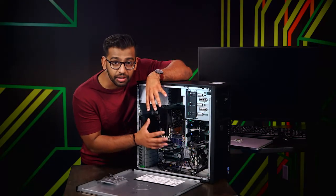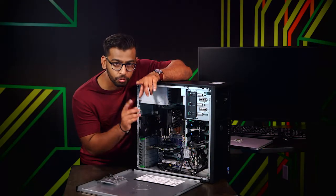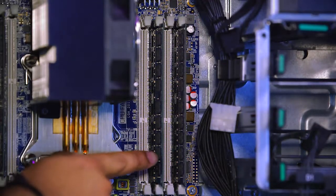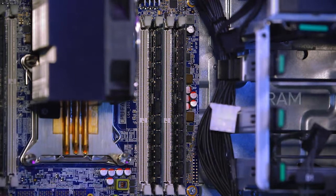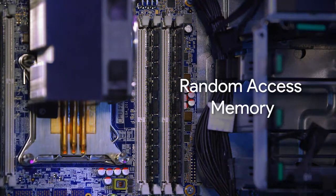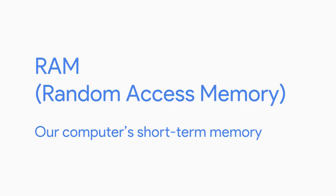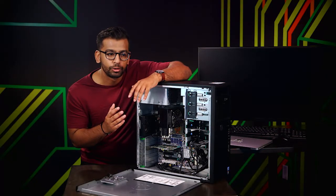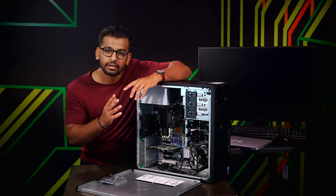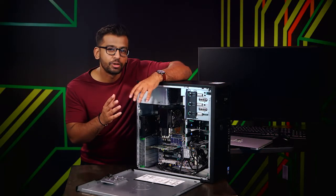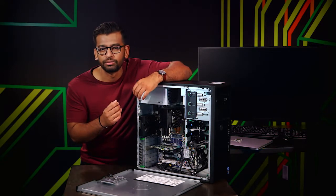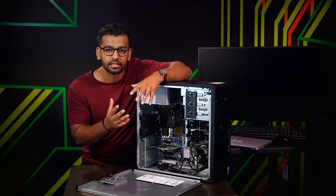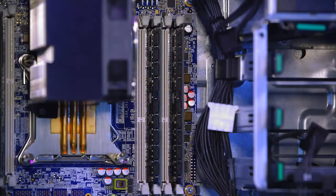The CPU communicates pretty heavily with this component right here — RAM, or random access memory. RAM is our computer's short-term memory. We use this component when we want to store data temporarily. For example, if you're typing something into a chat or a word processor, that information is stored in the RAM.